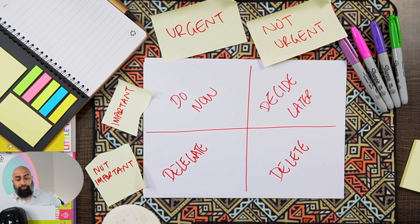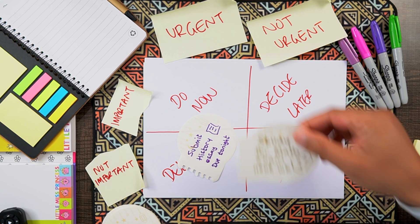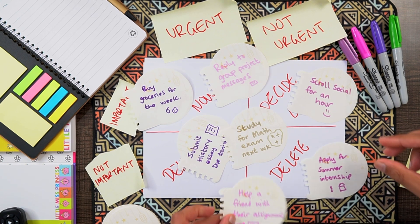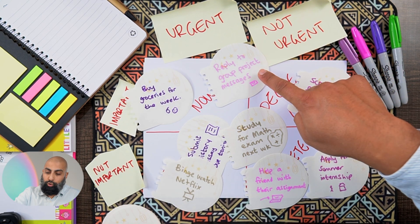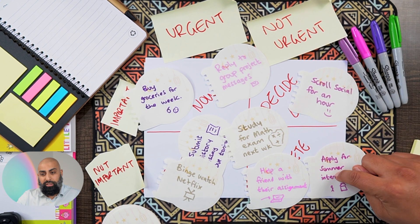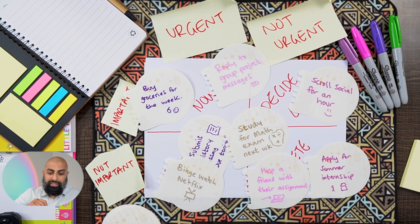These are the same labels from part one. Now let's start adding some real-life examples. Let's organize a real student's to-do list. Imagine it's a Monday morning and everything's on your plate — it's looking super messy. You've got: reply to group project messages, scroll social media for an hour, study for math test next week, apply for a summer internship, help a friend with their assignment, submit a history essay due tonight, and binge watch Netflix.